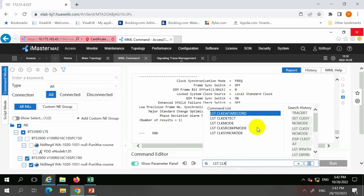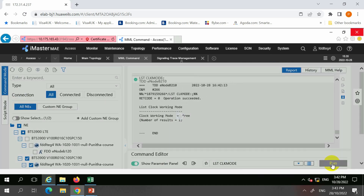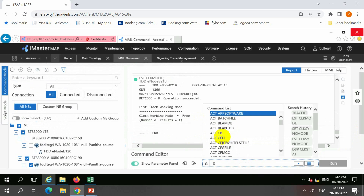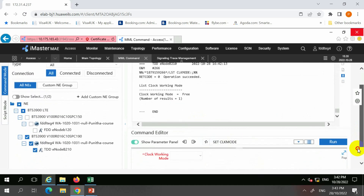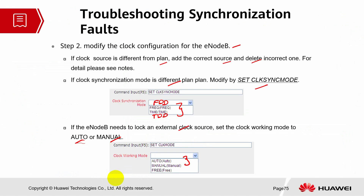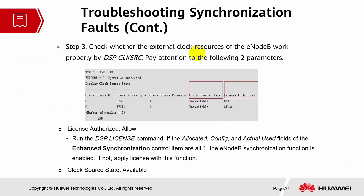Next, check whether the external clock resources of the eNodeB are properly configured using 'display clock source'. The clock source also requires a license. In this example, two clock systems are shown but both are unavailable, and only the IP clock has a license — so only the IP clock server can be activated. You can also check the license using 'display license' and look for 'enhanced synchronization control' to confirm it is activated and the function is enabled. If not, you need to apply for the license. The clock source data should show as available; if it shows unavailable, further investigation is needed.